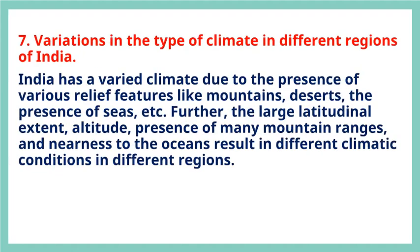Question 7: Variations in the type of climate in different regions of India. India has a varied climate due to the presence of various relief features like mountains, deserts, and the presence of seas. Further, the large latitudinal extent, altitude, presence of many mountain ranges, and nearness to the oceans result in different climatic conditions in different regions.